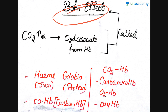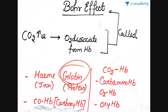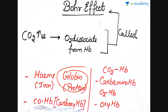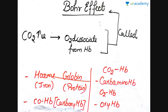Before that, some important points: heme means iron and globin means protein. Wherever globin is written, it means it is a hydrophilic protein — for example, hemoglobin, myoglobin, immunoglobulin. If carbon monoxide is attached with hemoglobin, it is called carboxyhemoglobin. When carbon dioxide is attached, it is called carboaminohemoglobin — 'amino' refers to the amino terminal of the globin protein, meaning carbon dioxide attaches to the amino terminal of hemoglobin. When oxygen is attached with hemoglobin, it is called oxyhemoglobin.